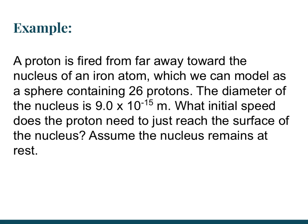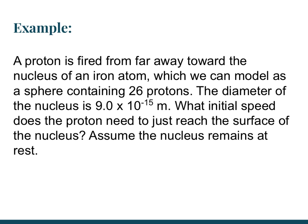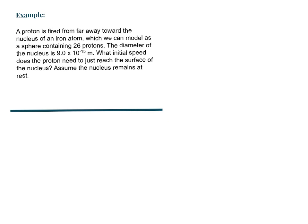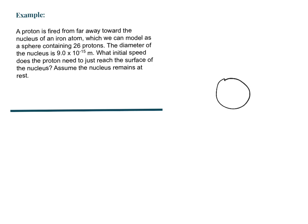A proton is fired from far away towards the nucleus of an iron atom, which we can model as a sphere containing 26 protons. The diameter of the nucleus is 9 times 10 to the negative 15 meters. What initial speed does the proton need to just reach the surface of the nucleus? Assume the nucleus remains at rest. It's important to note that the sphere we're looking at is just the nucleus, not an entire atom.